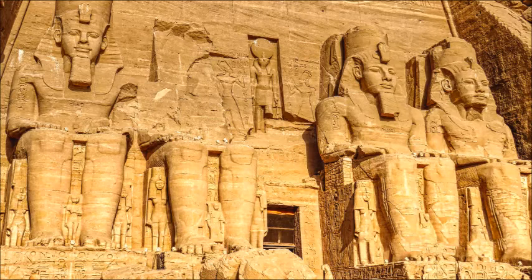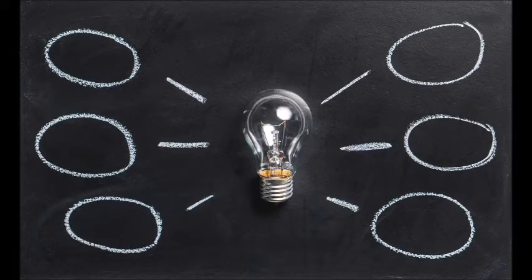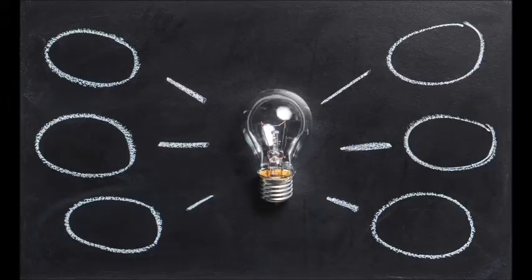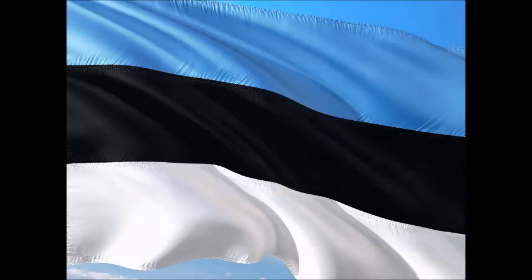A flag carries emotional value and therefore should be created accordingly. It is also highly recommended to use stylized objects or symbols rather than realistic pictures. The flags of Estonia and Ukraine are good examples of this rule, as they both represent natural phenomena in their countries.